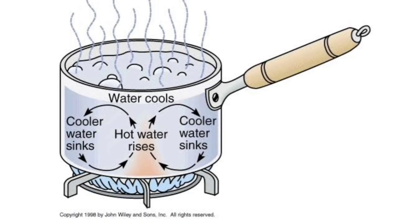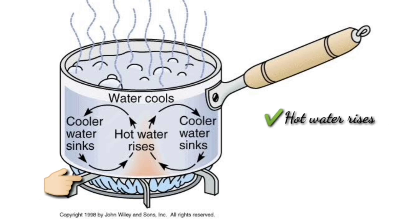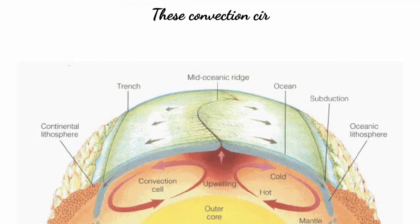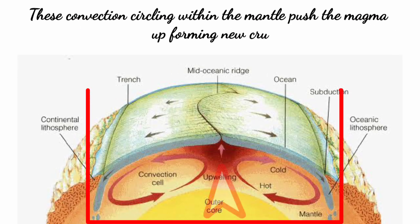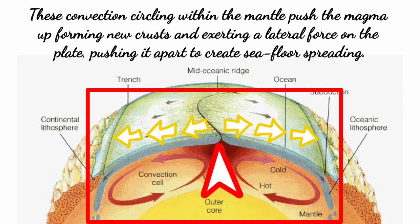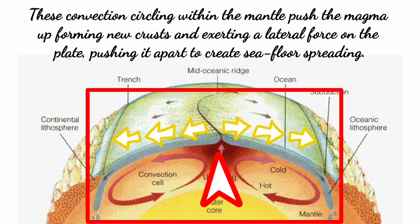Convection in the mantle behaves the same way convection happens in a pot of soup on a hot stove. The material near the heat source becomes hot and expands, making it less dense than the materials above. Buoyancy causes it to rise, and cooler materials flow in from the sides then sink at the bottom, creating cycles of sinking cold and rising warm material. This convection circling within the mantle pushes the magma up, forming new crusts and exerting a lateral force on the plate, pushing it apart to create seafloor spreading.